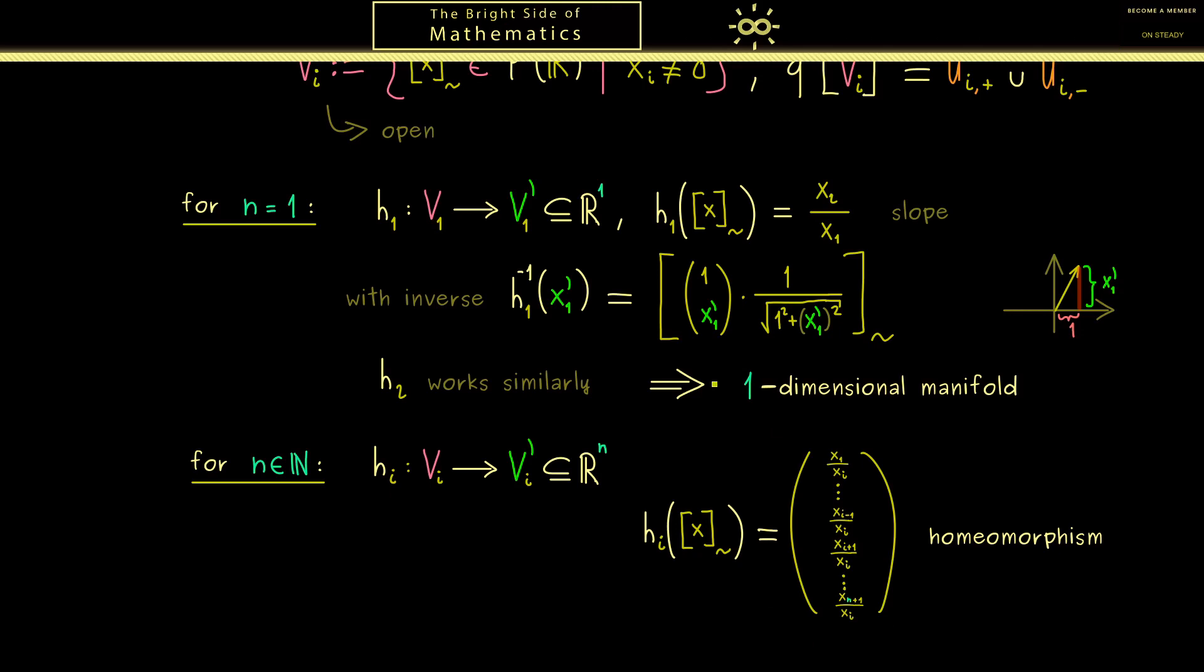And now you should see this works for each i from 1 to n+1. And moreover, similarly to before, we can show that this is a homeomorphism. Of course the inverse looks more complicated than before, but the idea is the same. We just put 1 to the ith position and then we scale it back to the sphere. And then of course our conclusion is that we have an n-dimensional manifold. So this is what you can remember: the projective space is an example of an abstract manifold.